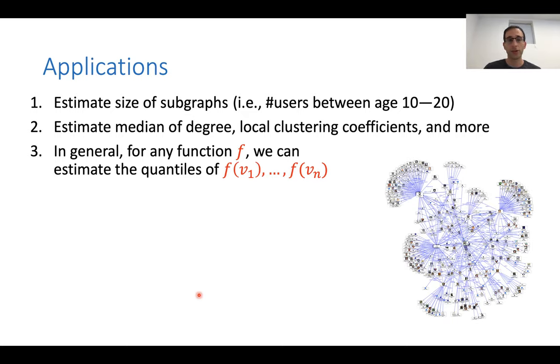And there are several applications of this main result. And I'll just talk shortly about a few. So first you can estimate not only the size of the graph itself, but any sub graph. For example, if in the metadata that you get for a user, you know, the user's age, then you can actually check how many users are between the age 10 and 20, just treating this sub graph. Other health measures that you can get actually as a application of the main theorem is the distribution of the degree, the median of the degree, what's called the local clustering coefficient, and many other measures. And in general, for any function F, you can estimate the quantile, the median or other quantiles of these values of F applied to all the nodes of the graph.